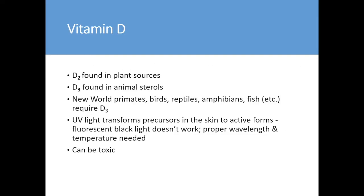Vitamin D is found in two sources: D2 found in plant sources, and D3 found in animal sterols. A number of species have a requirement for the D3 form specifically. We also know about the interaction between vitamin D and UV light, and high levels can be toxic. Another speaker will be addressing UV light, so I won't expand on that today.